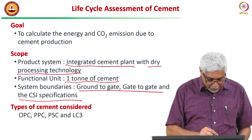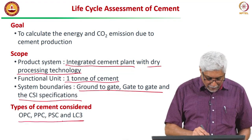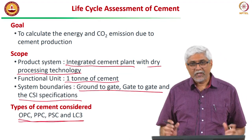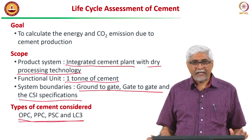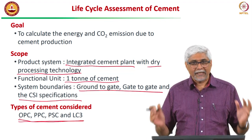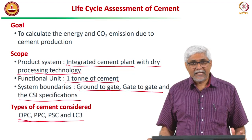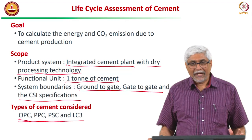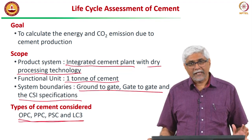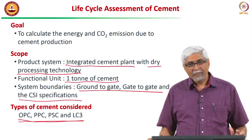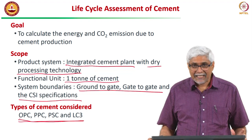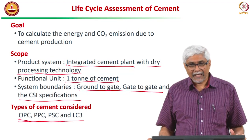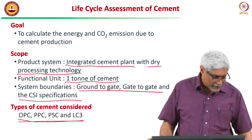Along with LC3, we will look at three other cements: Ordinary Portland Cement, which is 90 to 95% clinker; PPC, Portland Pozzolana Cement, mostly made with fly ash at 25 to 35%; PSC, Portland Slag Cement, which has 50 to 60% slag; and then LC3 as introduced previously.